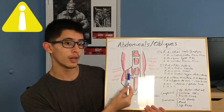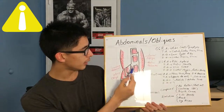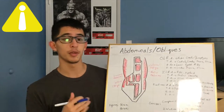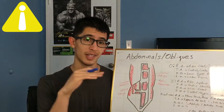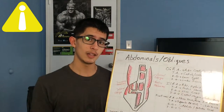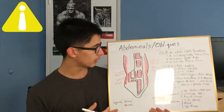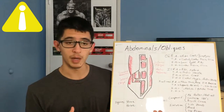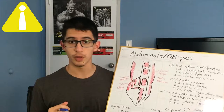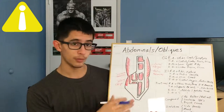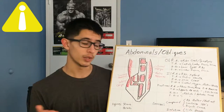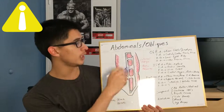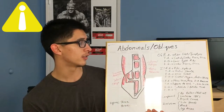The transverse abdominis — transverse means running sideways. Beneath the rectus abdominis, here's a little cutout: beneath your six-pack we have the transverse abdominis, whose muscle fibers run side to side as opposed to up and down. This layer of the abdominals helps your body go sideways as well.